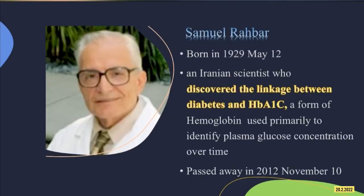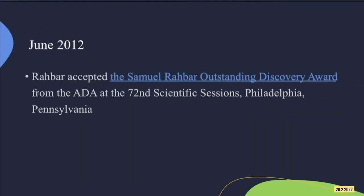In discussion about HbA1c, we should remember a person named Samuel Rahbar, an Iranian scientist. He discovered the linkage between diabetes and hemoglobin A1c, used primarily to identify plasma glucose concentration over time. In June 2003, Rahbar was awarded the Samuel Rahbar Outstanding Discovery Award by the American Diabetes Association.